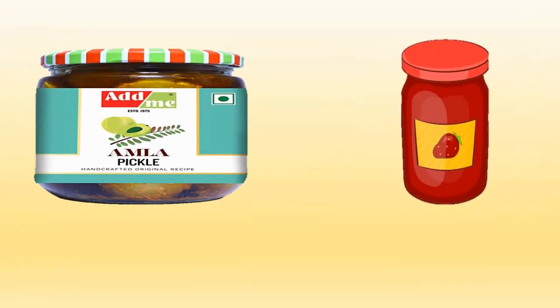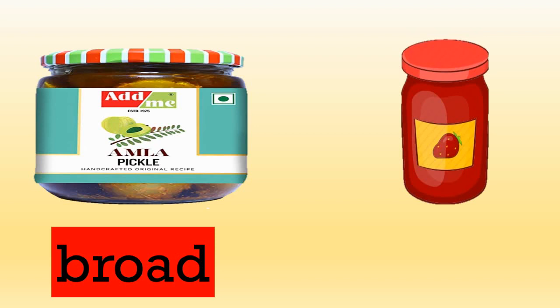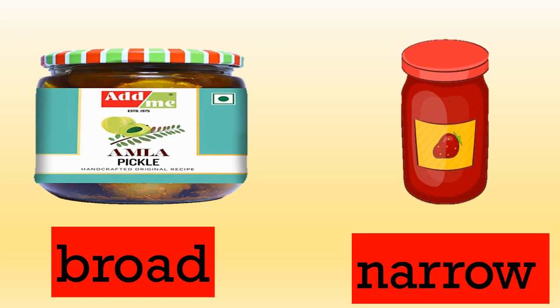Now student, look at this example. We have two bottles. In the first bottle, we have pickle, and in the second bottle, we have jam. In which bottle is there pickle? Yes, the pickle is in the broad bottle. And where do you see the jam? Yes, the jam is in the narrow bottle.